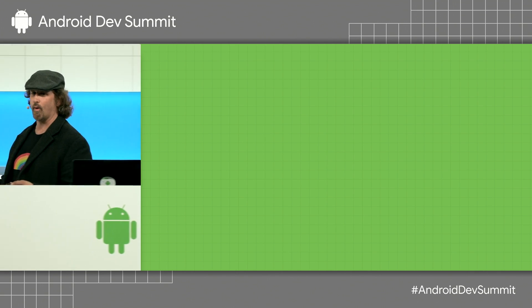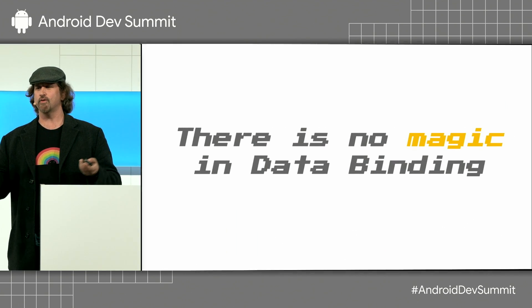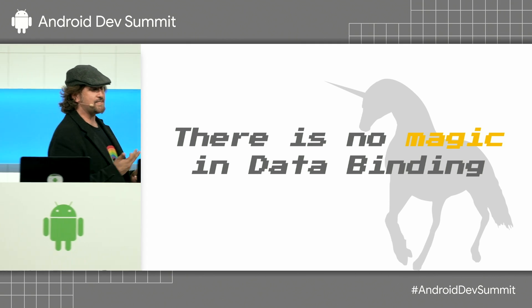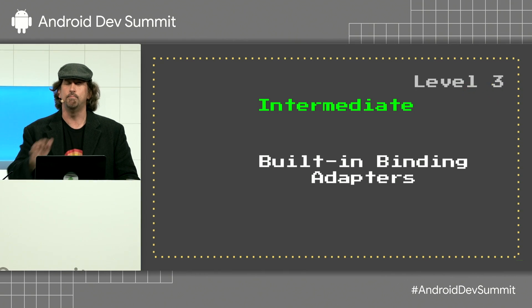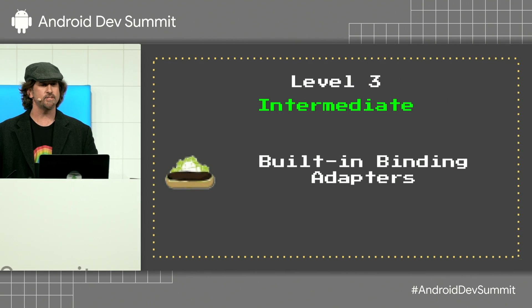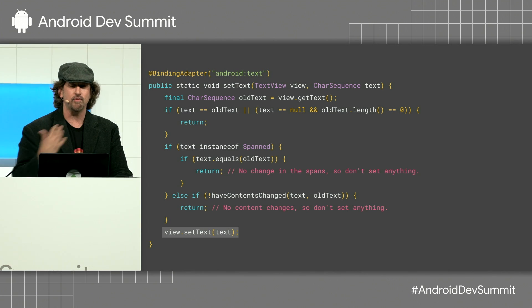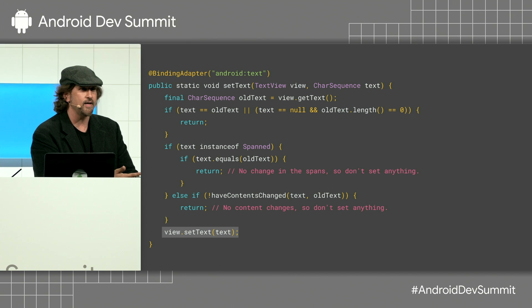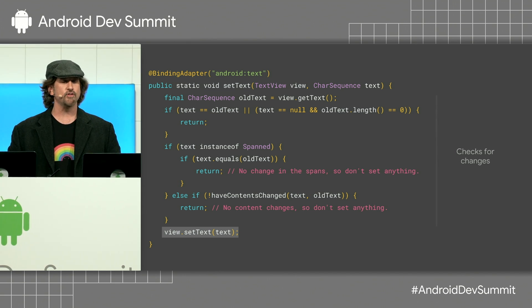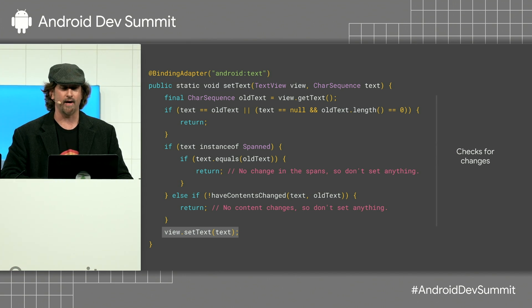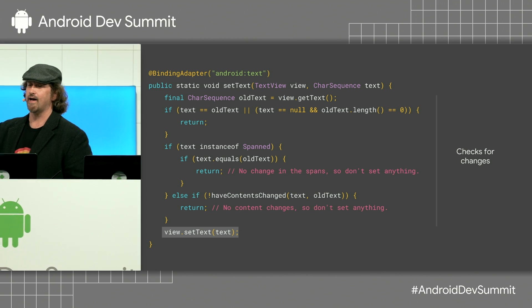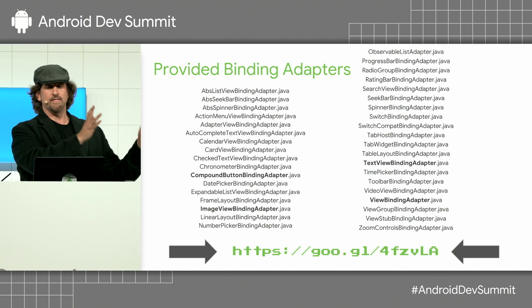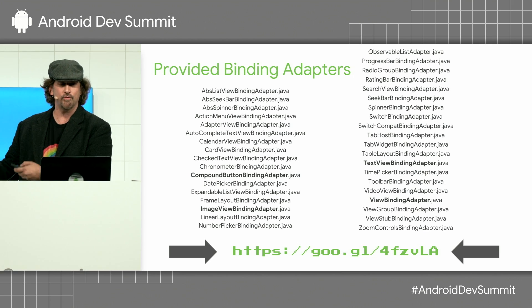But the real question is, how does this all work? The answer is that there is no magic in data binding — but it does seem like magic, and that's because we have built-in binding adapters that handle almost everything. With data binding, every call to the framework is actually made in a binding adapter. You can actually see the code and use a debugger to navigate through it. The first lines of the method are just checking for changes to only update the UI if necessary, and that last line is the setText we're looking for. There are lots of adapters provided by data binding, and they make it behave intelligently and consistently across all these views.